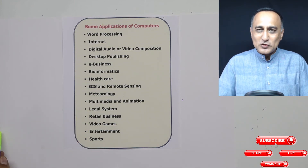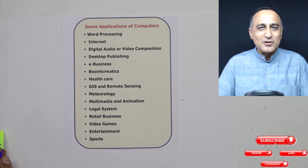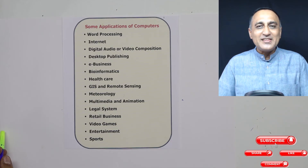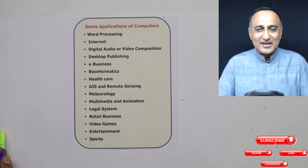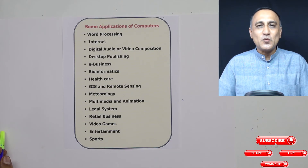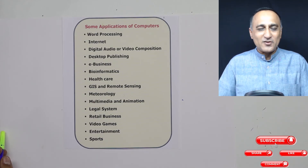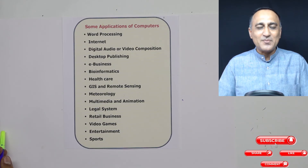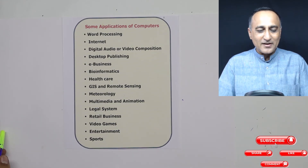In the legal system, if you go to the Supreme Court website today, all the cases with their results are available on the web. It will tell you which lawyer is fighting which case and when your case is next. Previously, you had to go to the clerk to get information about your next hearing. Today all the district courts in the country are automated, so you can go online and see the status of your case on that particular district website.